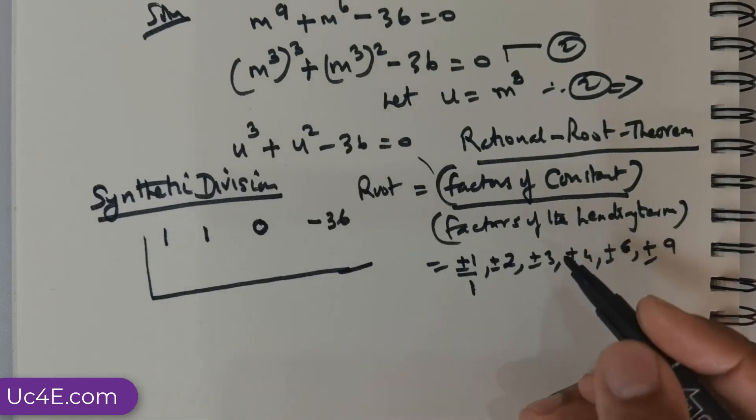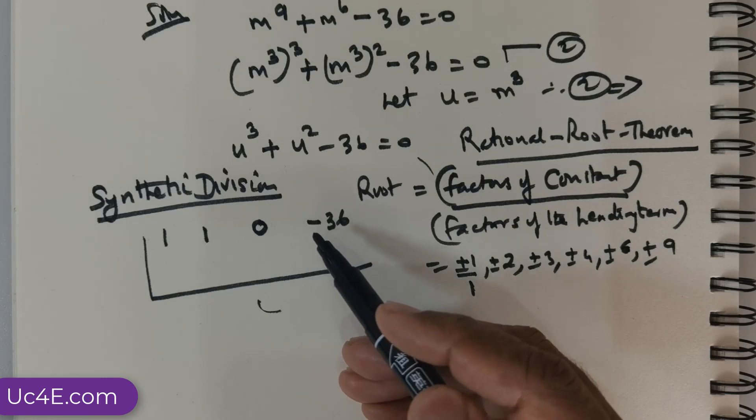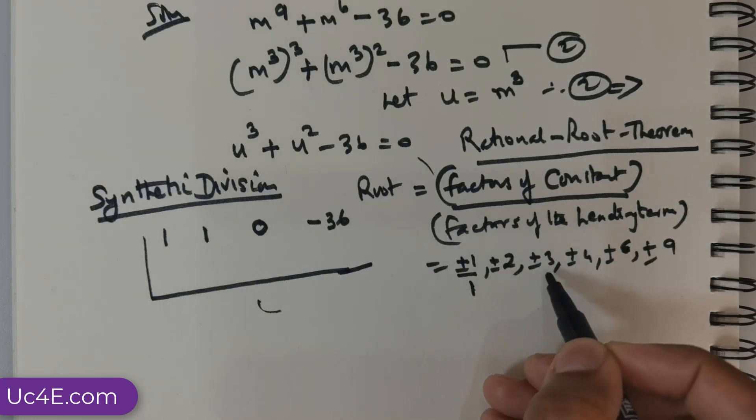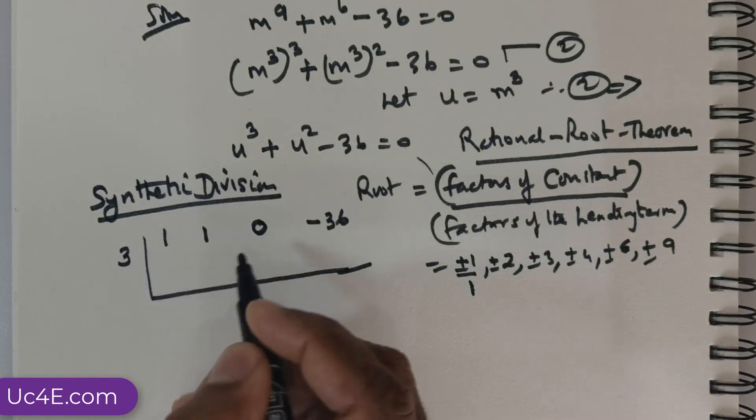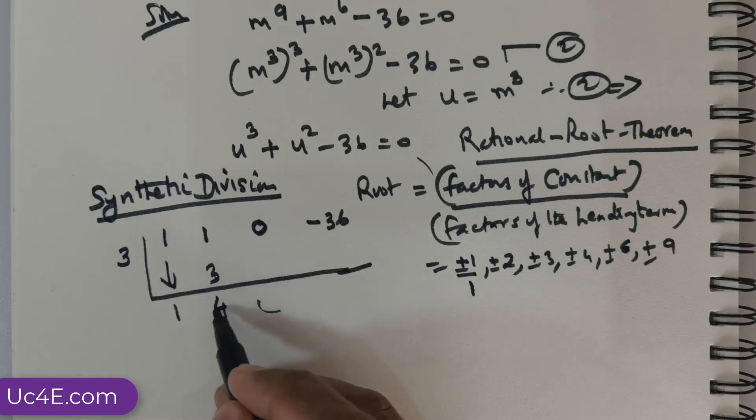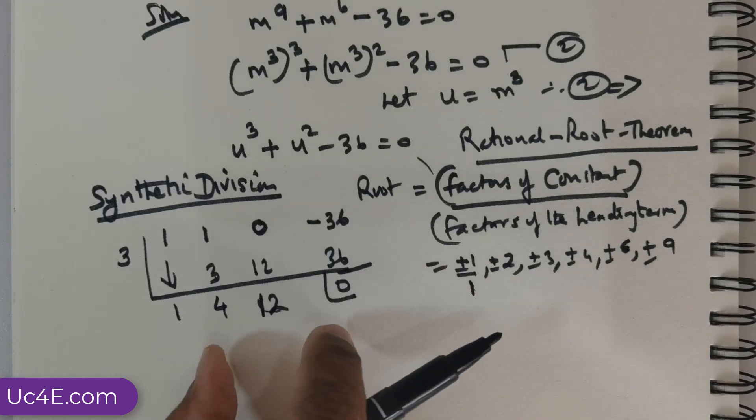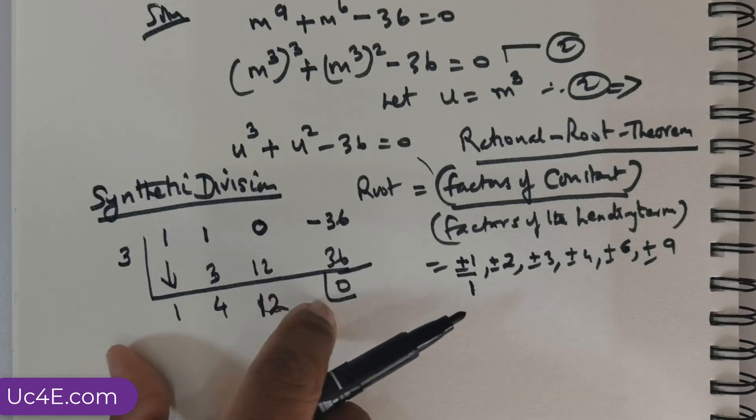Now, clearly I know, I can see that 1 is not going to be the root here. 2 is not going to be, 3 is not going to be. 3 can be a root. So, it is always a guess and check. So, I am going to place positive 3 there. So, I will bring the quantity 1 down. So, 3 times 1 is 3. 3 added with 1 gives me 4. 4 times 3 is 12. 12 added with 0 will give me 12. 3 times 12 is 36. So, you get a 0 here. So, that would mean 3 is a root.